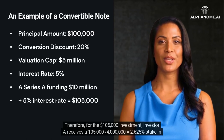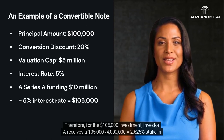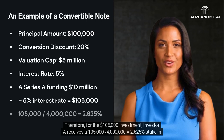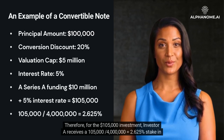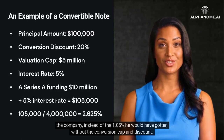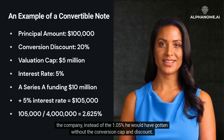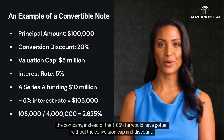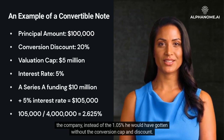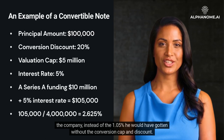Therefore, for the $105,000 investment, investor A receives a $105,000 ÷ $4 million = 2.625% stake in the company, instead of the 1.05% he would have gotten without the conversion cap and discount.